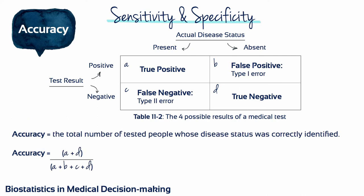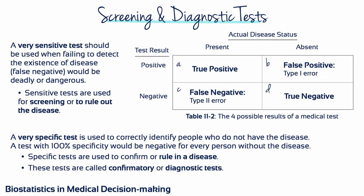We will do this in class. A very sensitive test should be used when failing to find a disease that really exists — that is, a false negative — is really dangerous or deadly. However, you will be following up on a higher number of false positives under these circumstances than you would had you used a less sensitive test. Sensitive tests are used for screening or to rule out the disease. You can rule out the disease in people who test negative on a sensitive test.